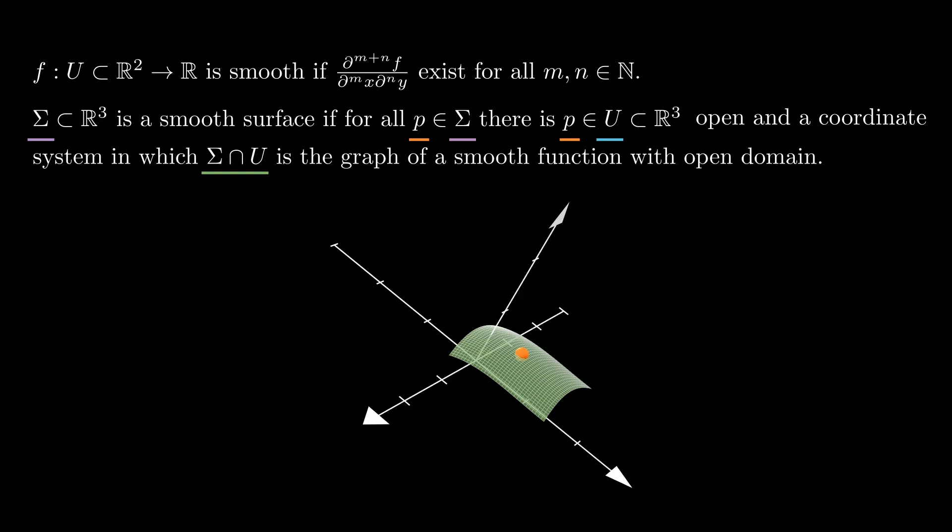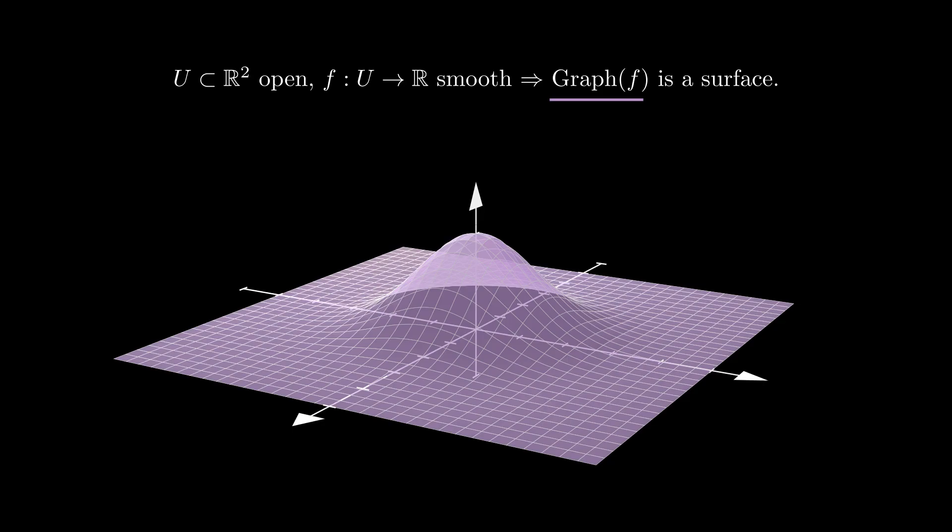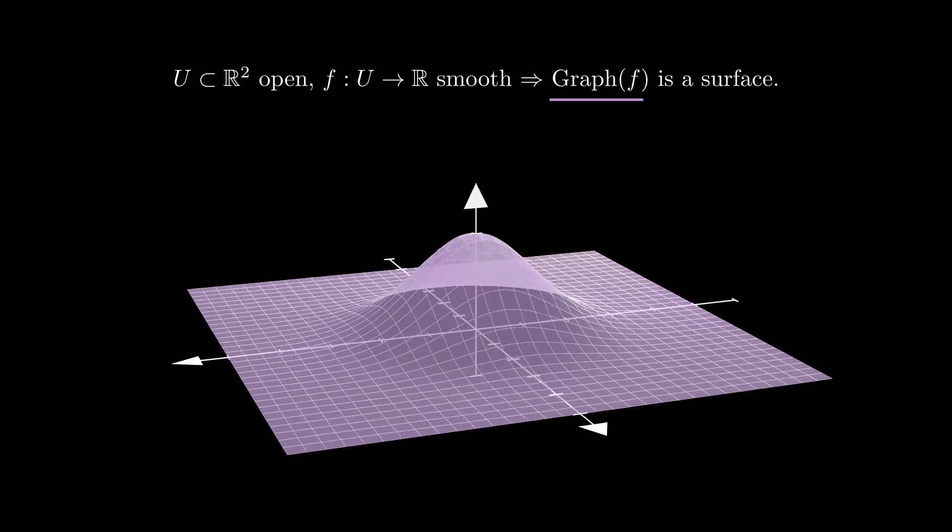Before we move further, let's review some examples of smooth surfaces. If f is a smooth function of two variables with connected open domain, then its graph is a smooth surface.